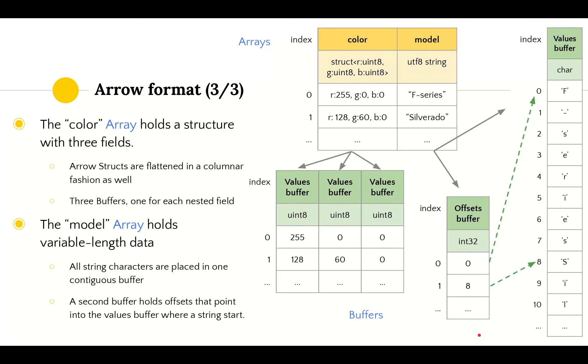Now let's look at the last two Arrow arrays of our record batch. The color array holds a struct with three fields that are primitive—three Uint8s representing RGB values. Structures are flattened in Arrow in a columnar fashion as well. All values in a specific field of the struct are stored in a separate buffer. In this case, there's one buffer for the R values, one for G values, and one for B values. The last array holds strings.